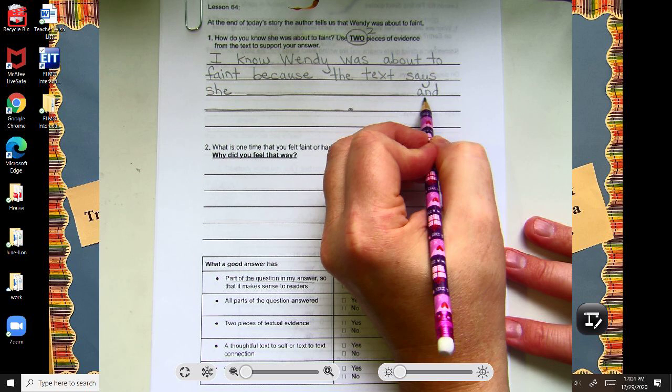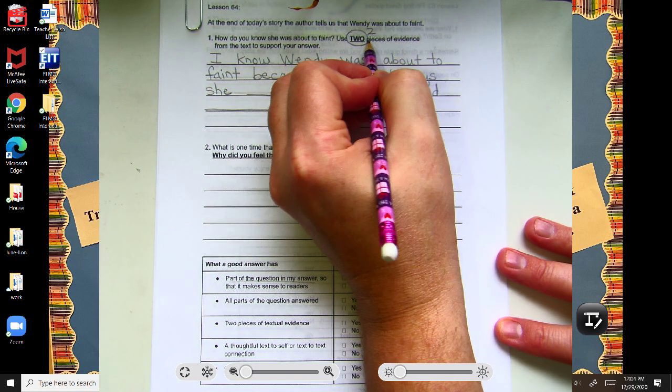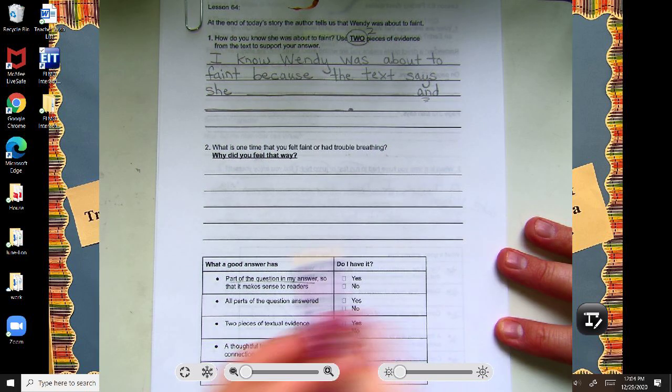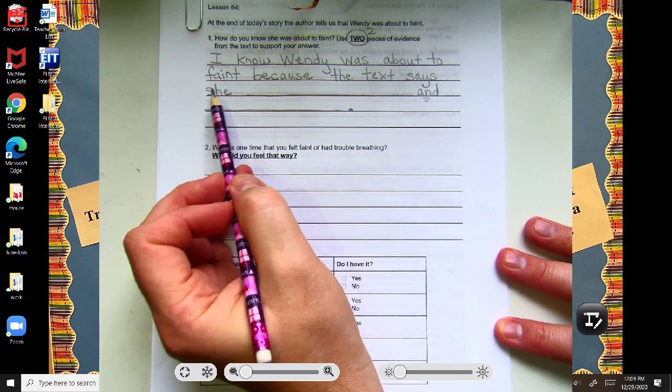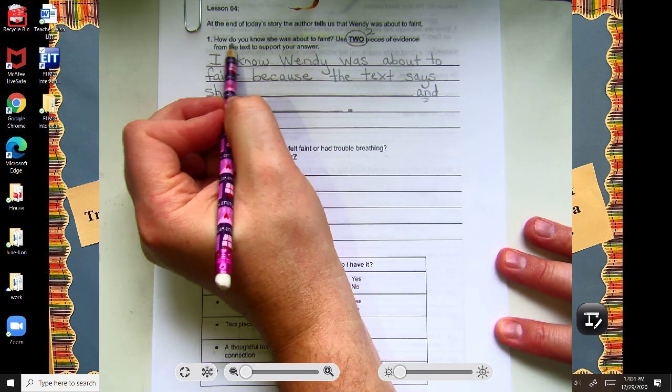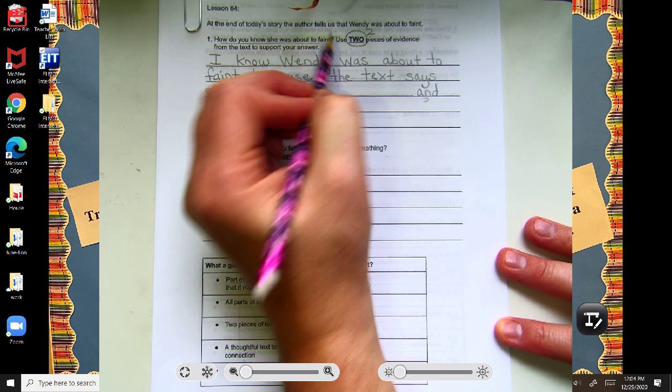Remember, this word, and, is going to help you make sure you have two pieces of evidence, and a starter like this or something similar gives us a lot of words from the question.